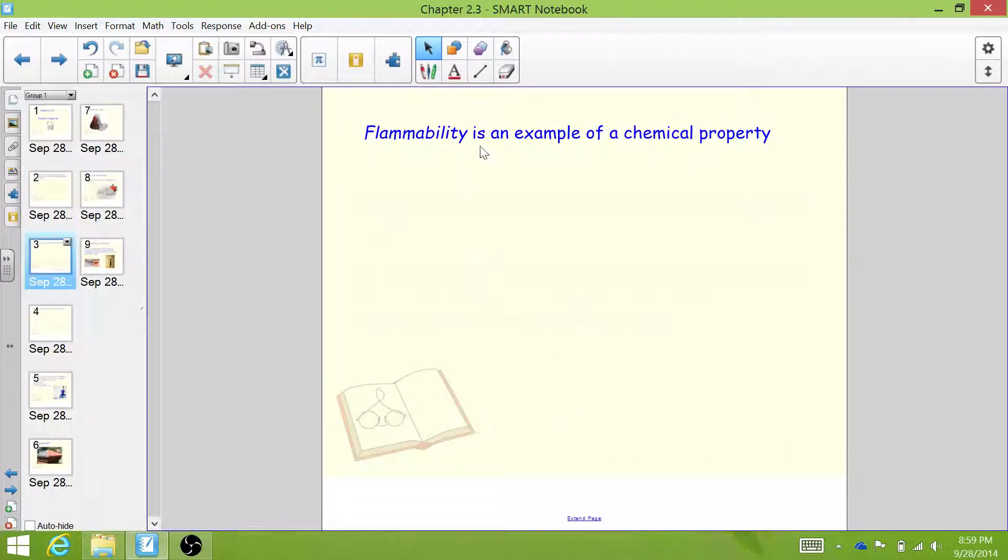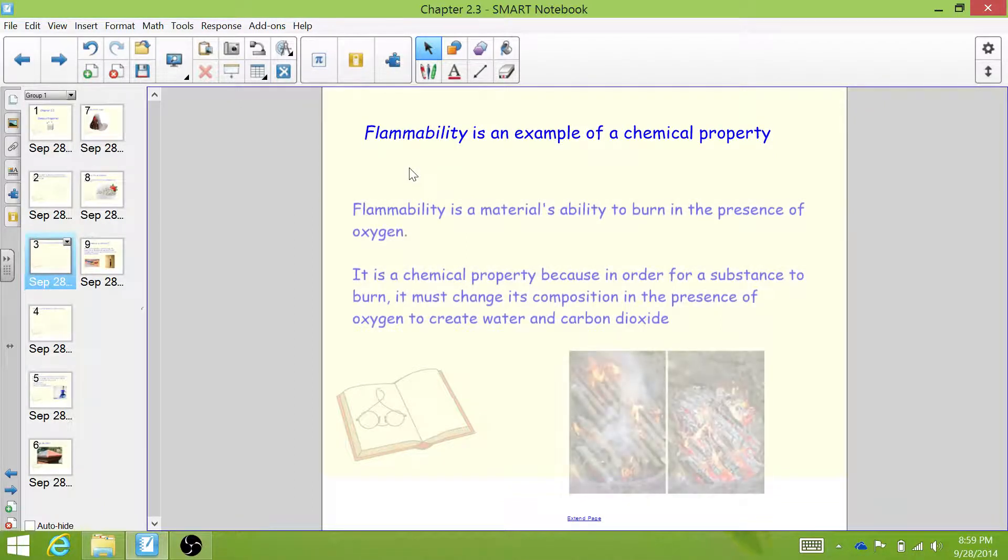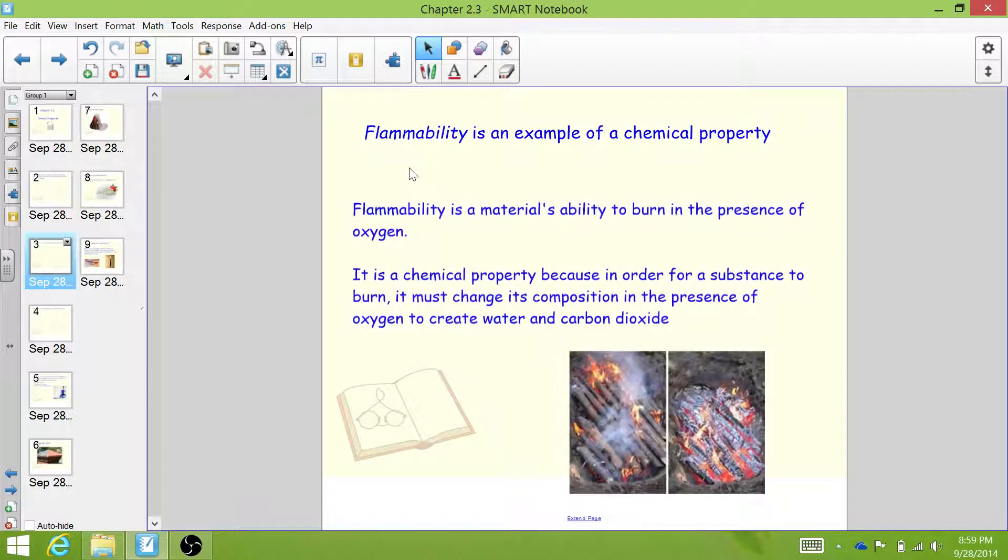An example of a chemical property is flammability, just like we saw with the candles. Flammability is a material's ability to burn in the presence of oxygen. Flammability is a chemical property because in order for a substance to burn, it has to change its composition.